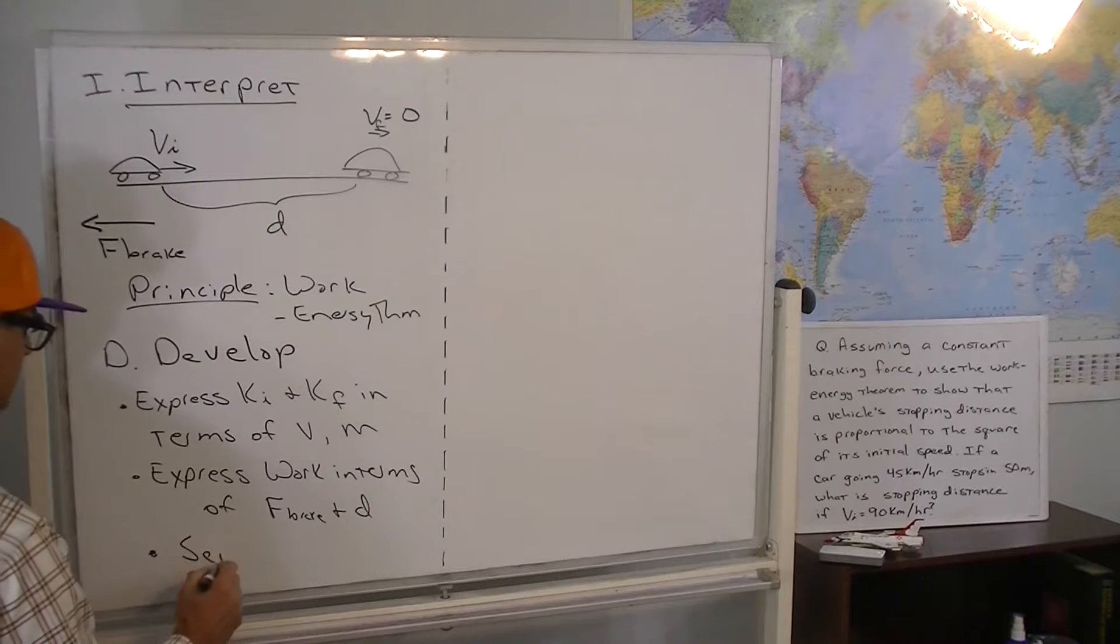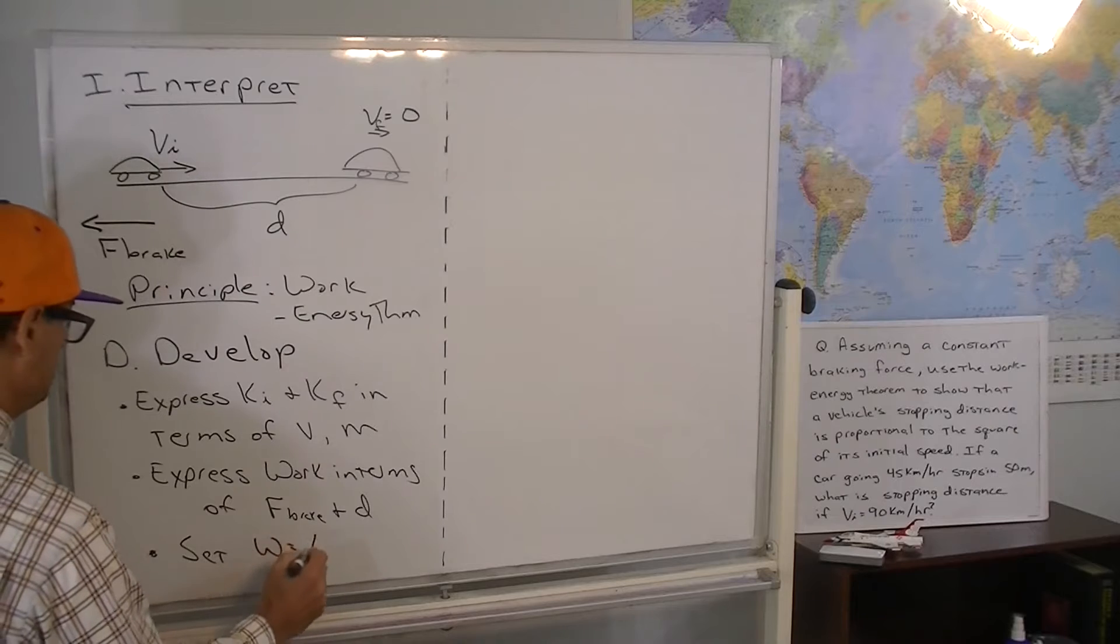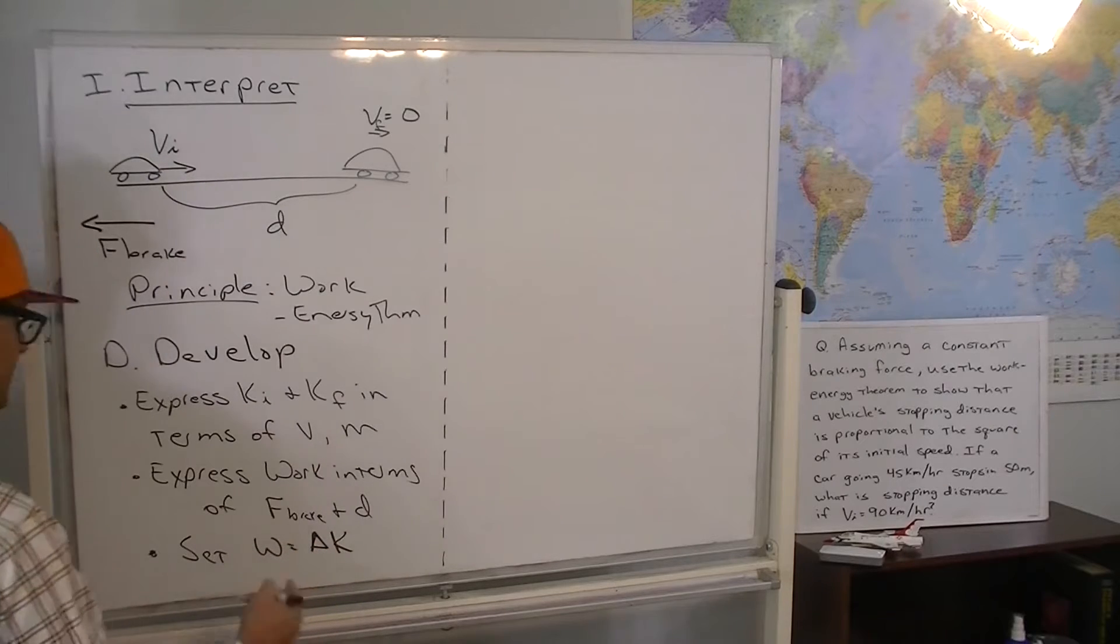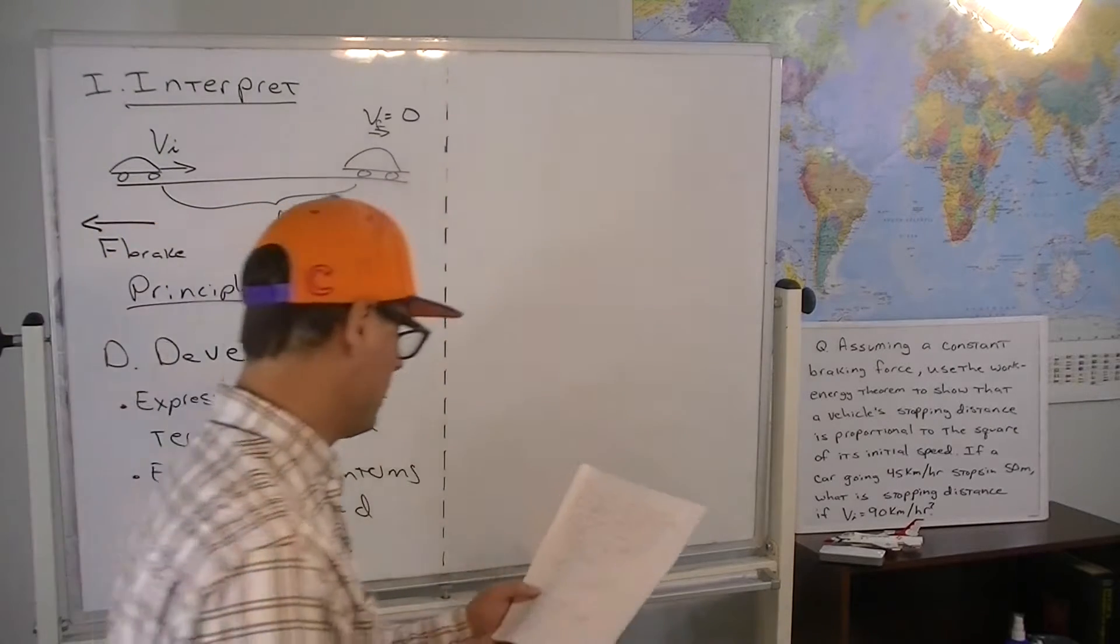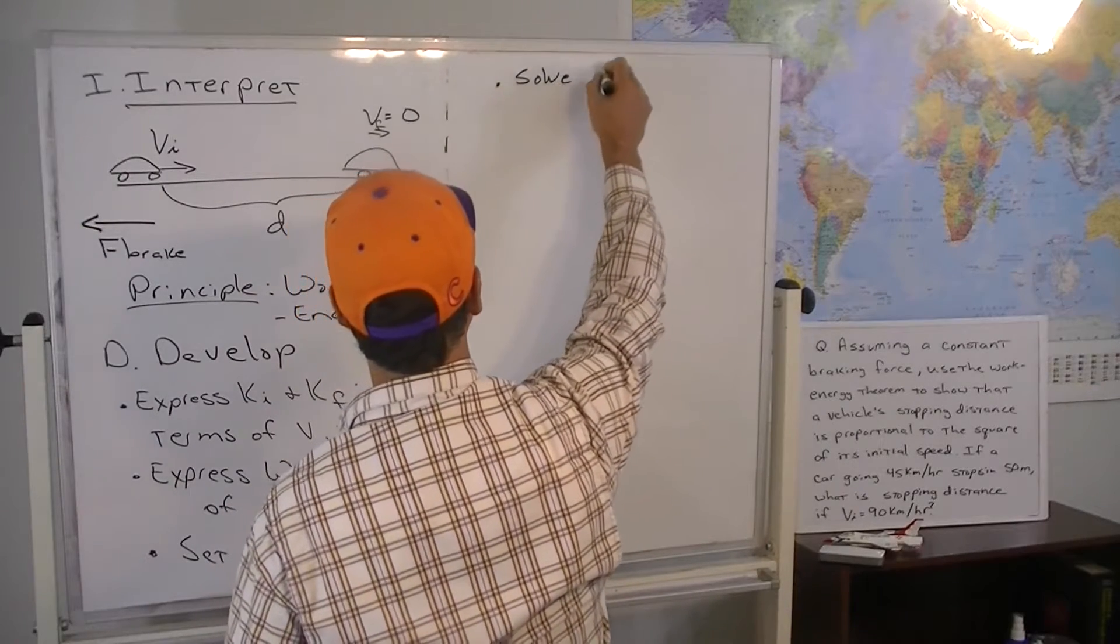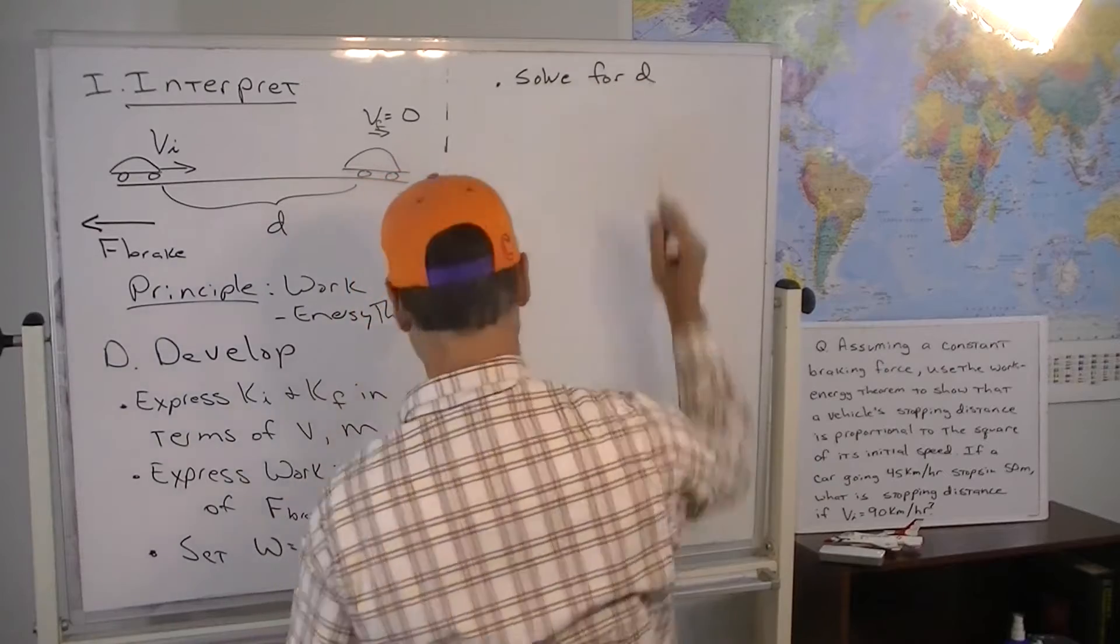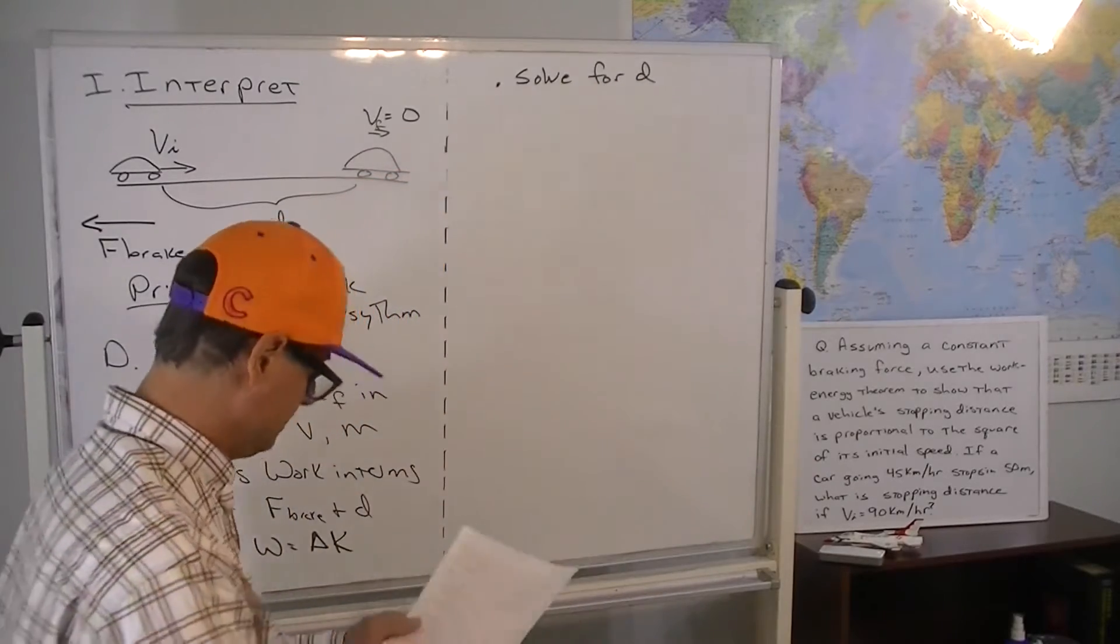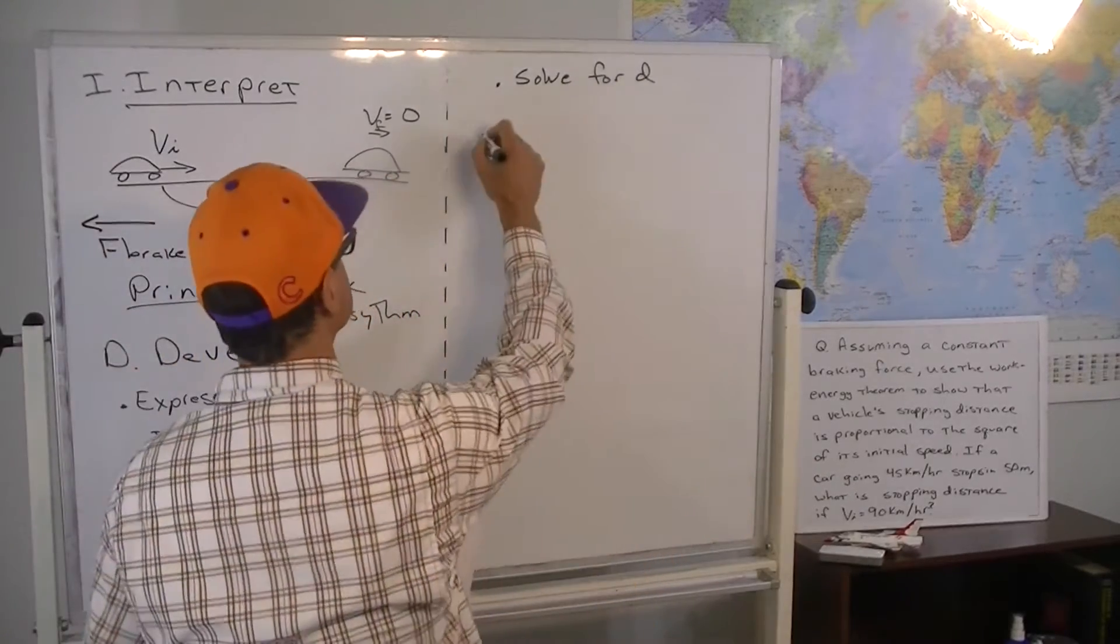And then we set the work equal to the change in kinetic energy. That's the work energy theorem right there. And then the last step is just to solve for D, the stopping distance, symbolically, of course.